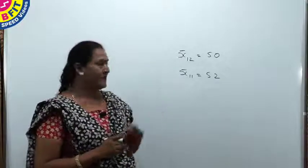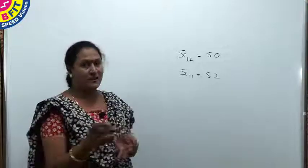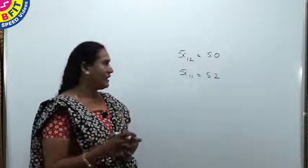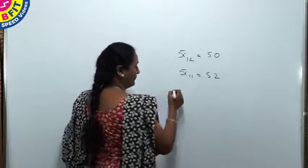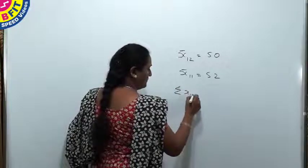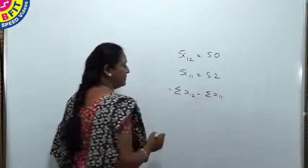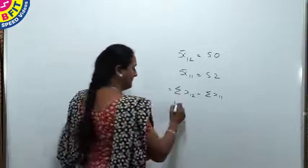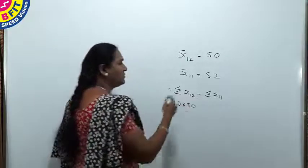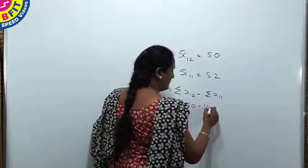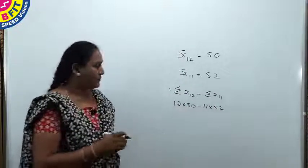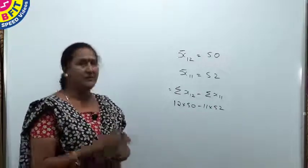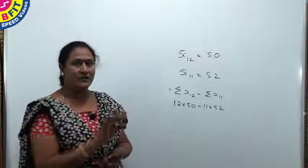To find the mark of the girl who left, following the same procedure, we find the sum of 12 terms and from that we subtract the sum of 11 terms, so we get the mark of the girl who left. The sum of 12 terms is got by multiplying 12 with 50, minus 11 with 52. But instead of doing all this working, we can use the same shortcut which we used in the previous concept — addition of one term.